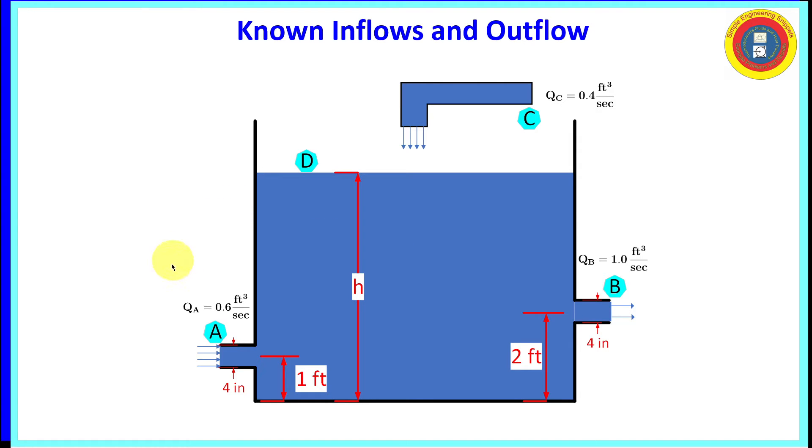Okay, so let's also look at the provided flow rates. At alpha, we have a volume flow rate of 0.6 cubic feet per second. Bravo, 1 cubic feet per second, outflow. And at Charlie, 0.4 cubic feet per second, inflow.